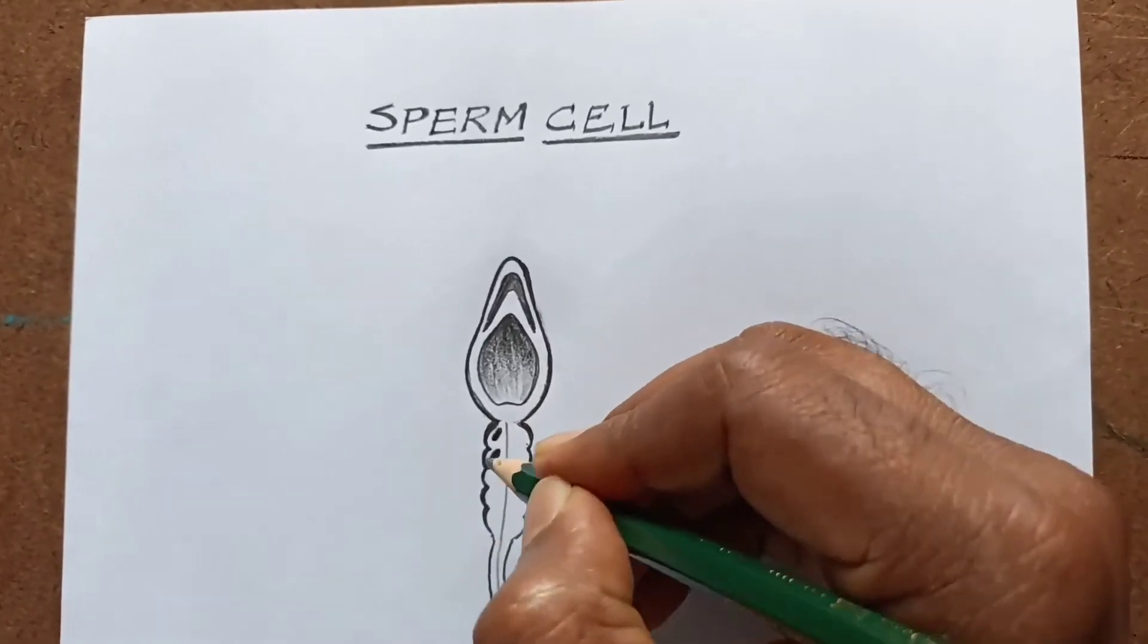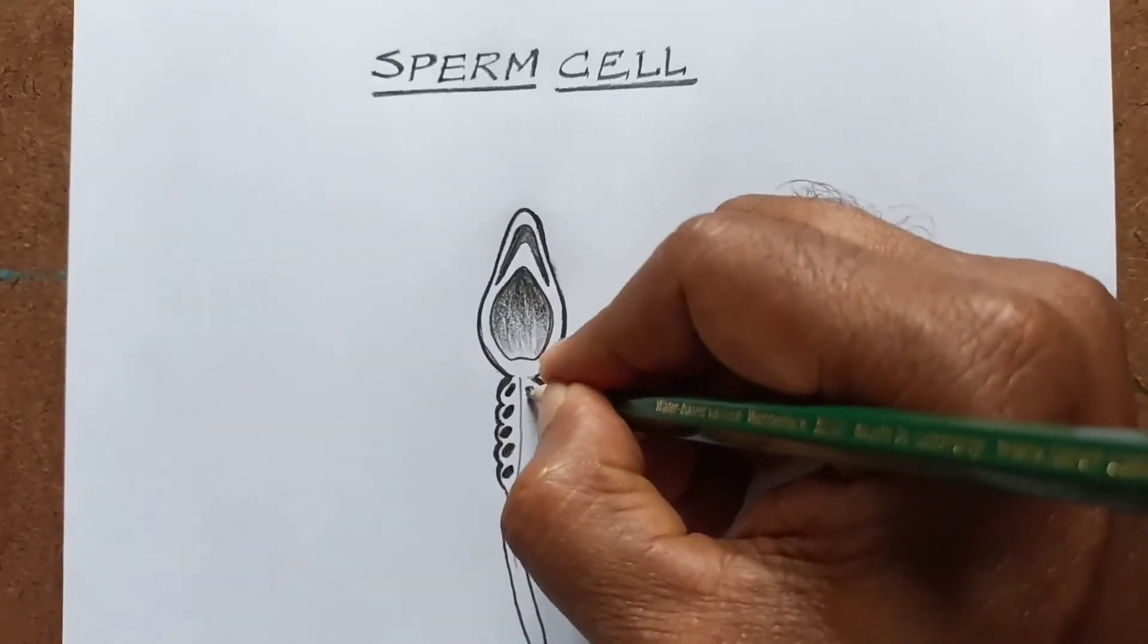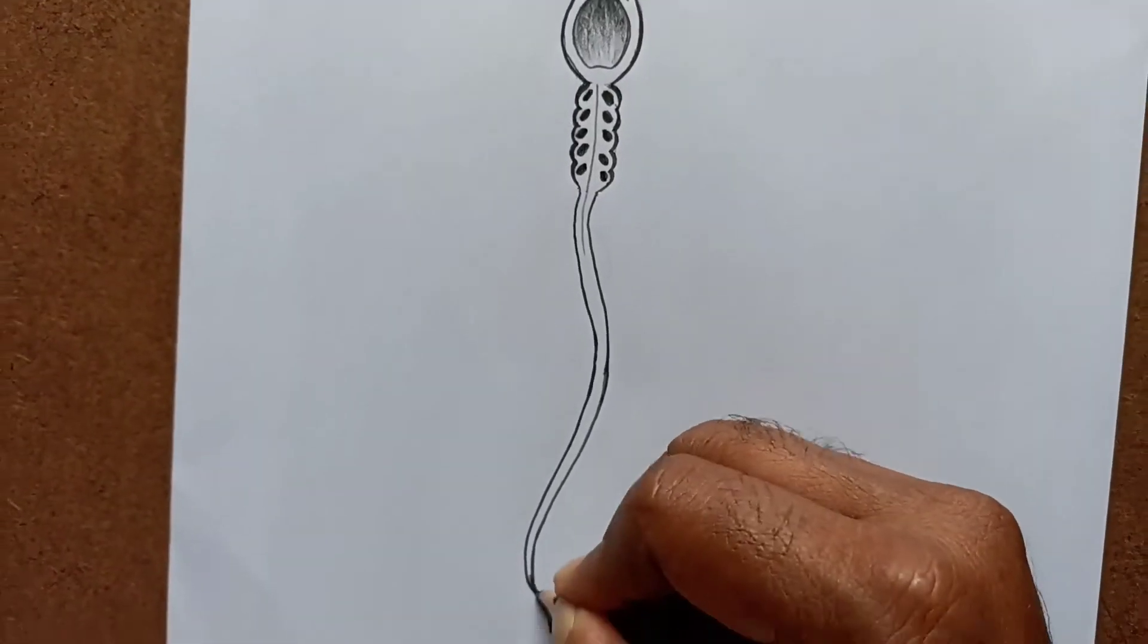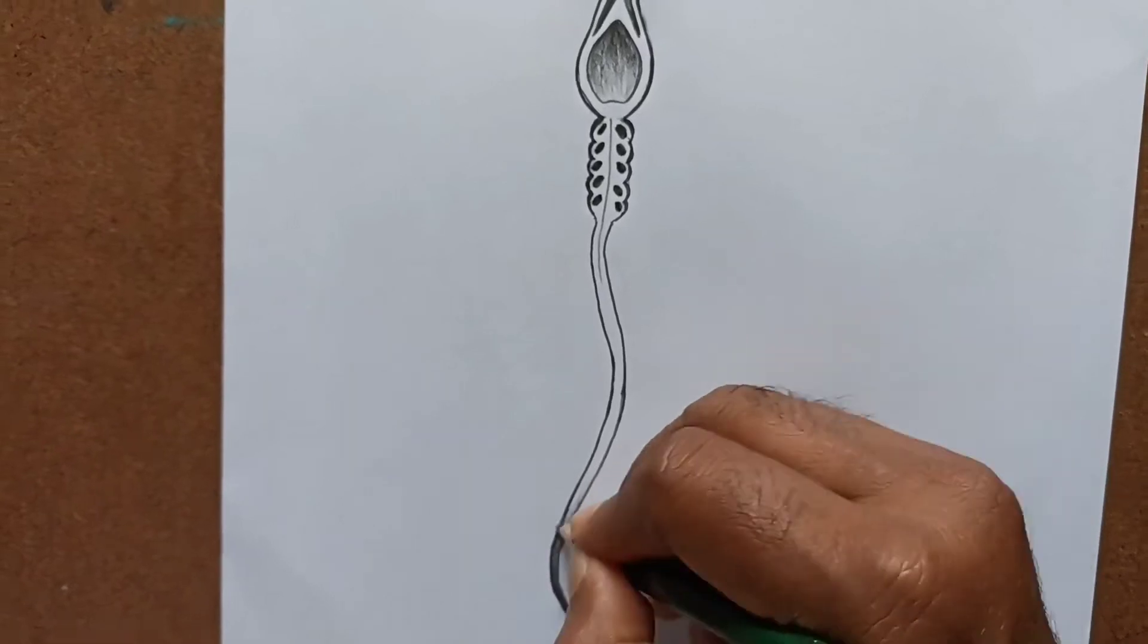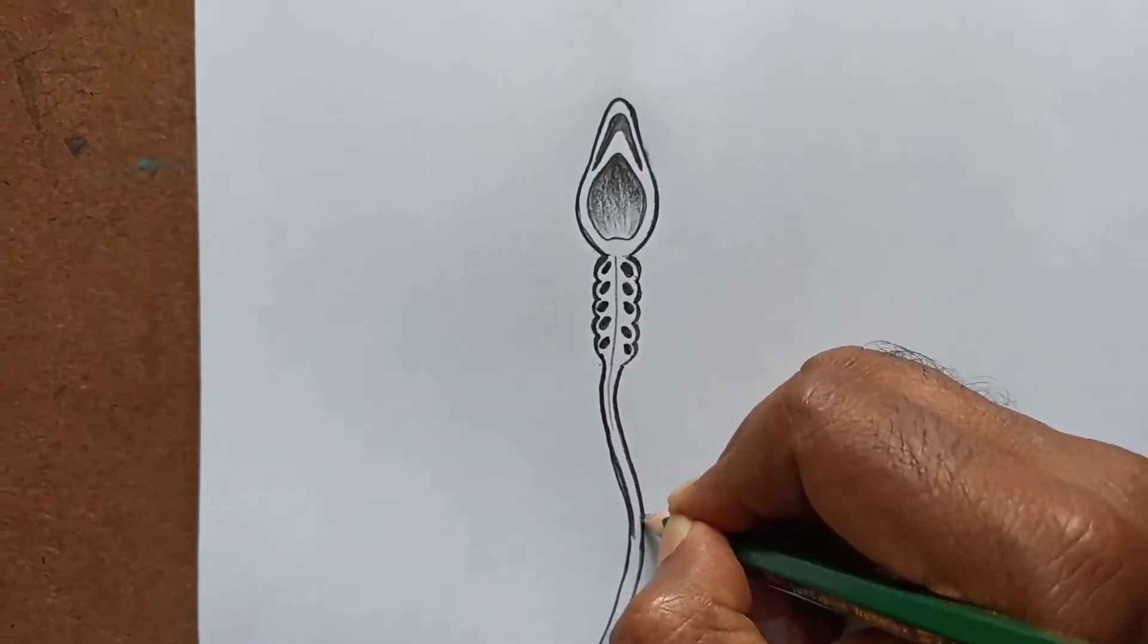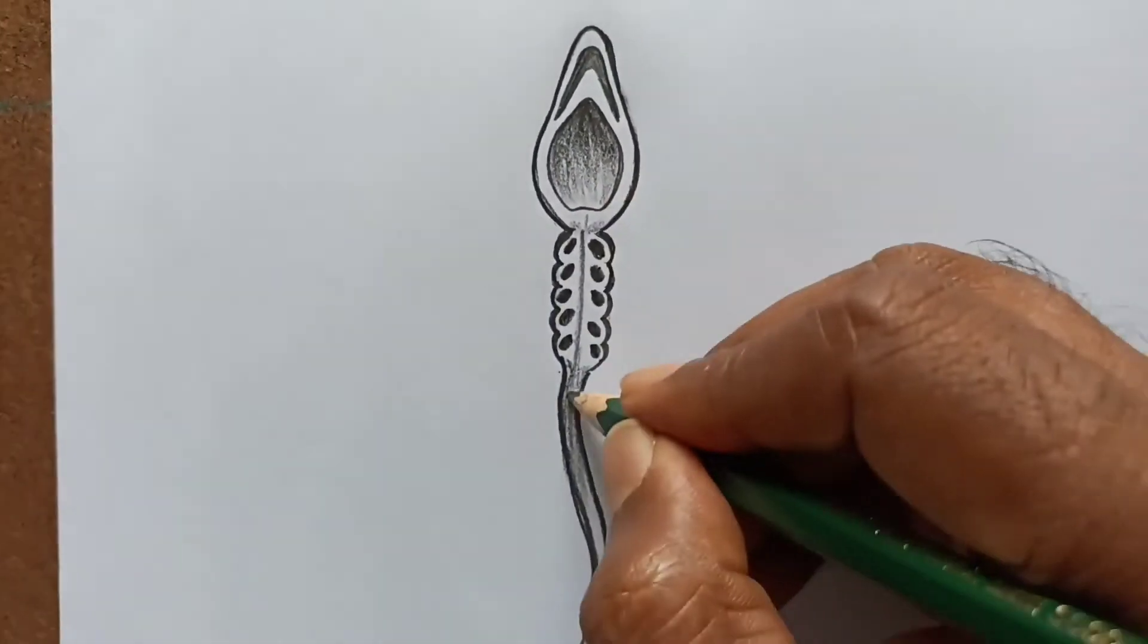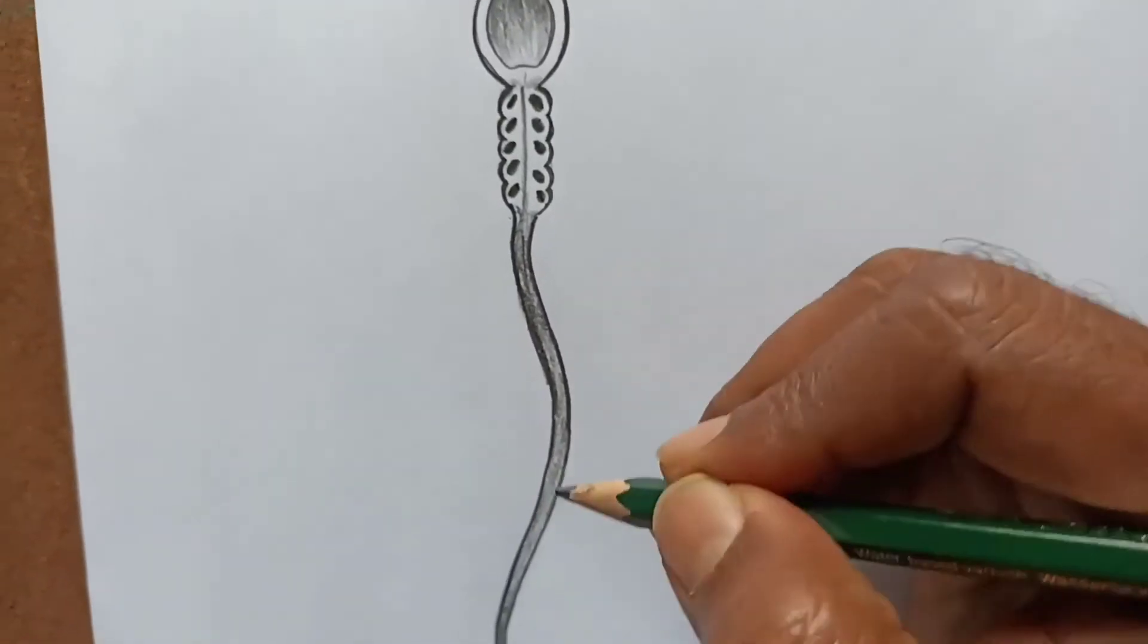These dots indicate mitochondria, which help in the synthesis of ATP. This middle piece provides energy for the movement of sperm due to the presence of mitochondria. This is the tail.